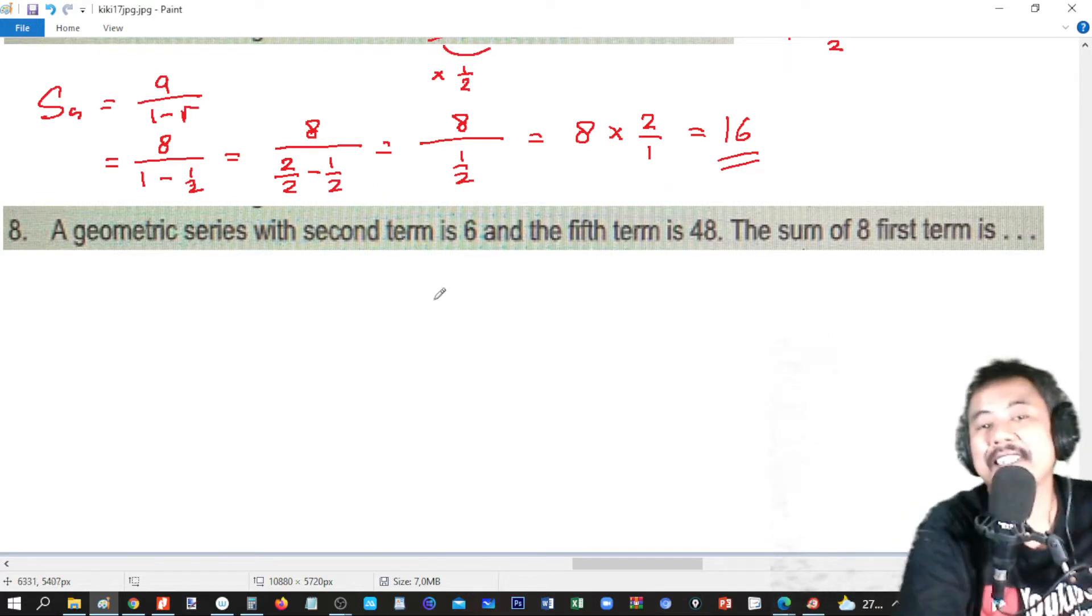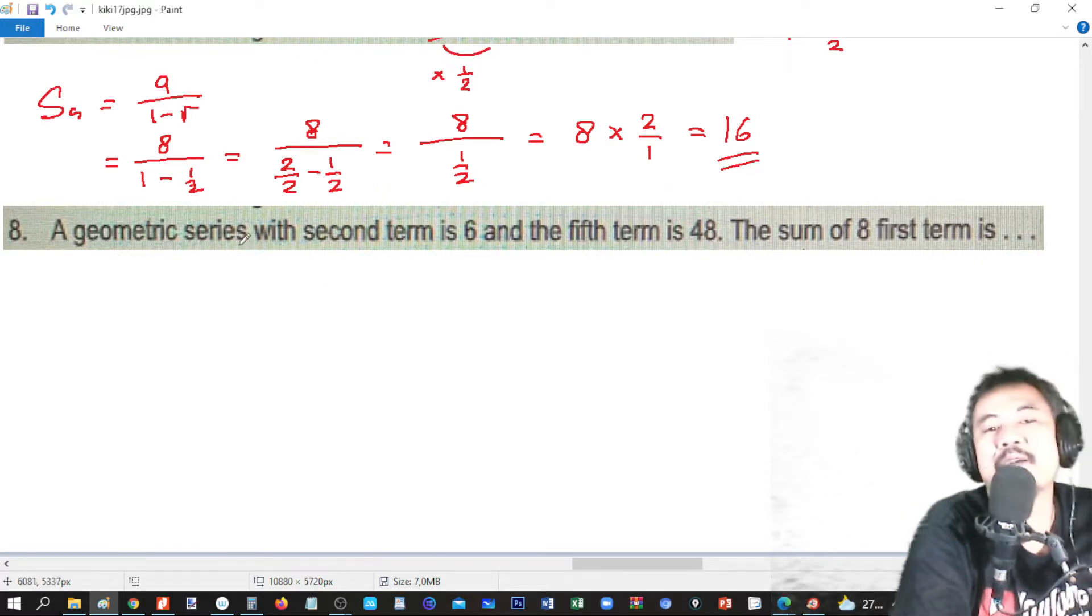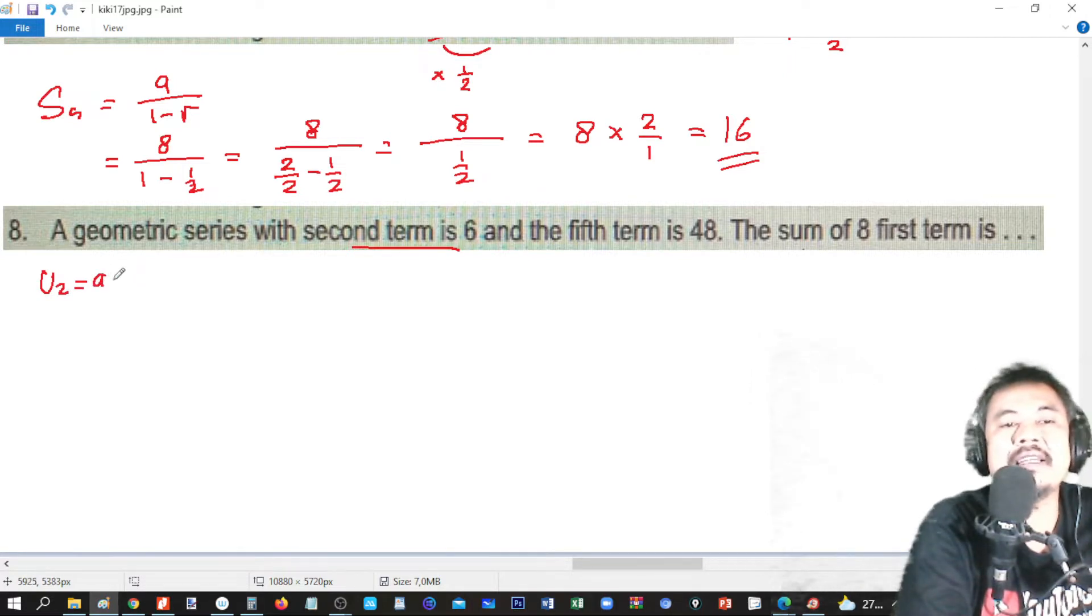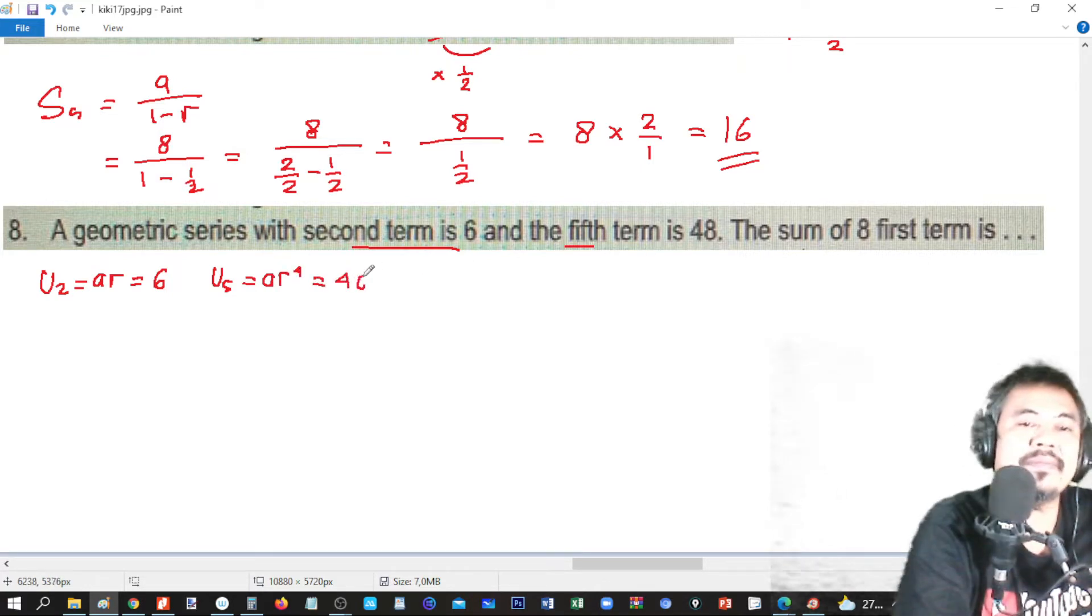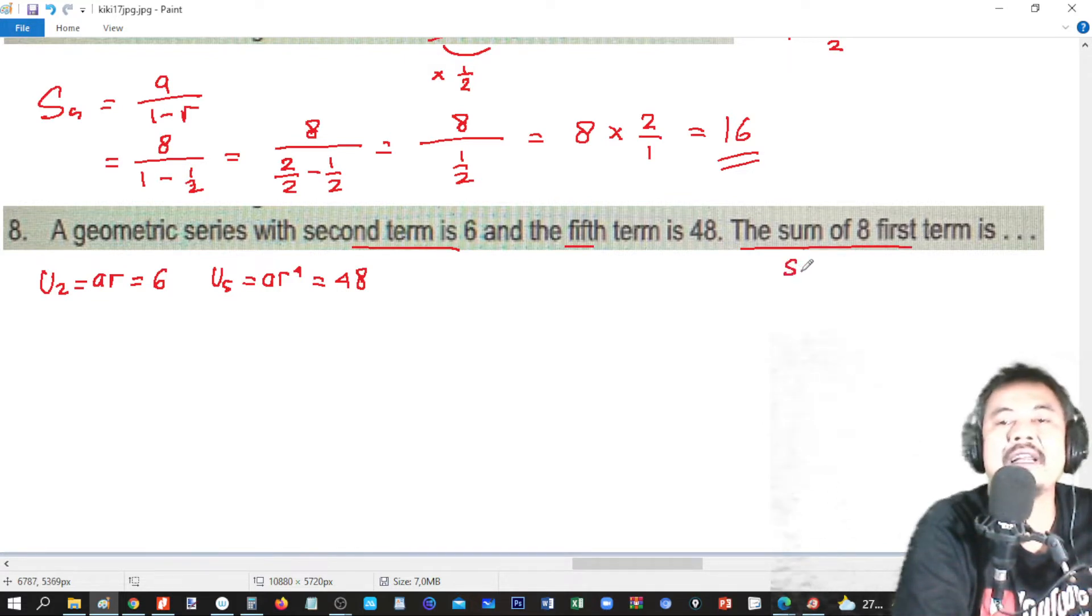A geometric series with the second term is 6. U2 equals A times R, which equals 6. And the fifth term, U5, is A times R to the power of 4, and it is 48. The sum of 8 terms, S8, is what we need to find.